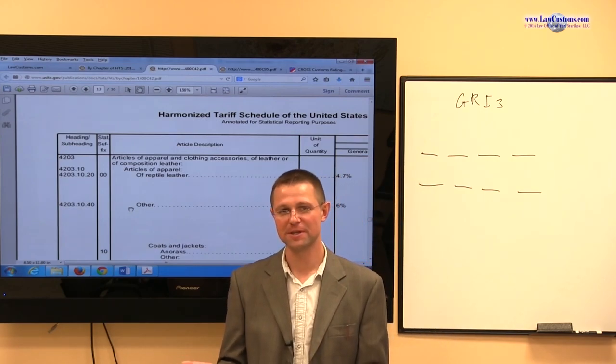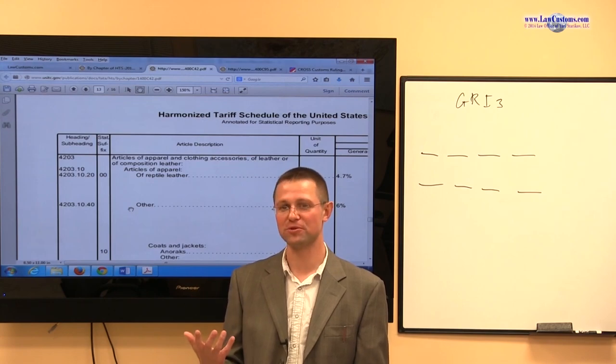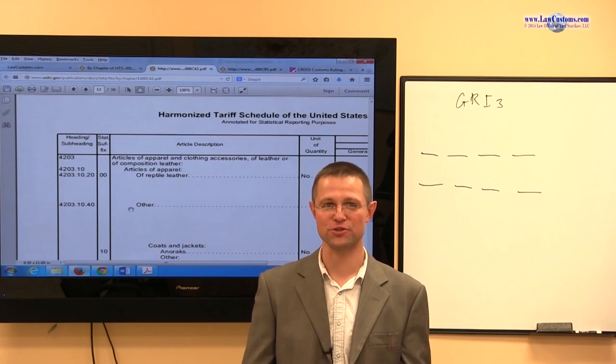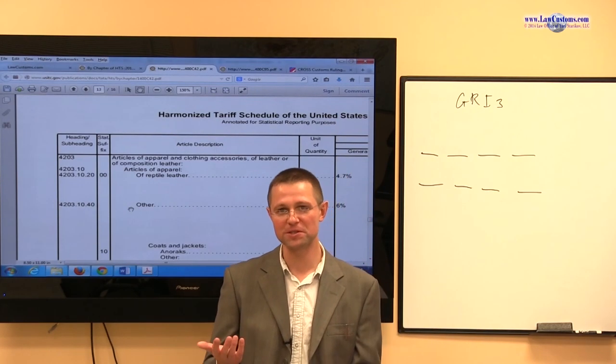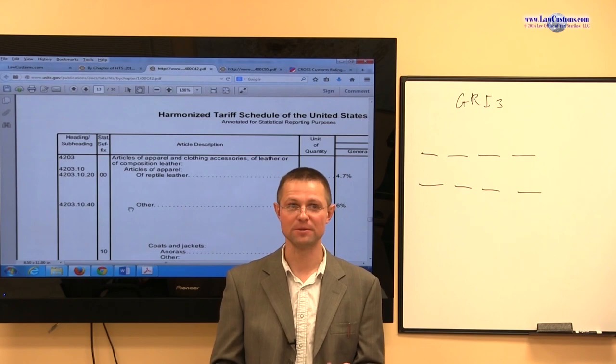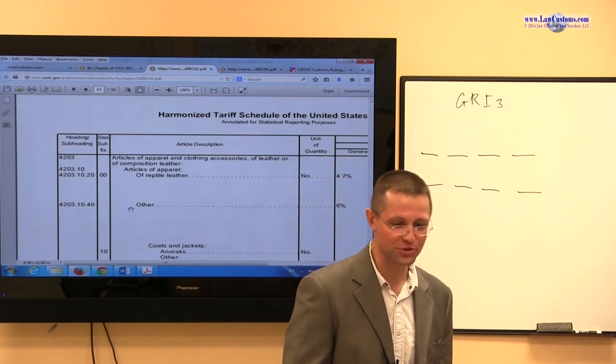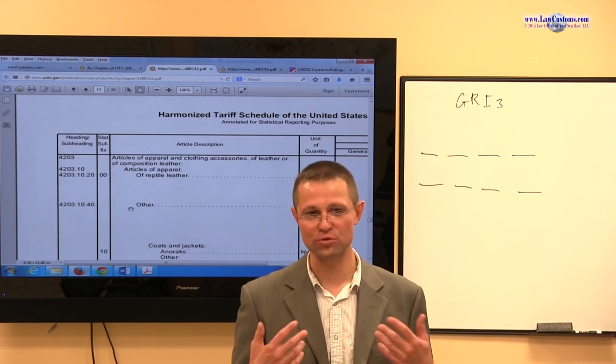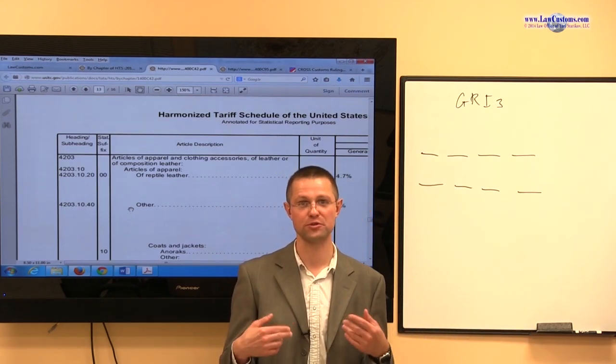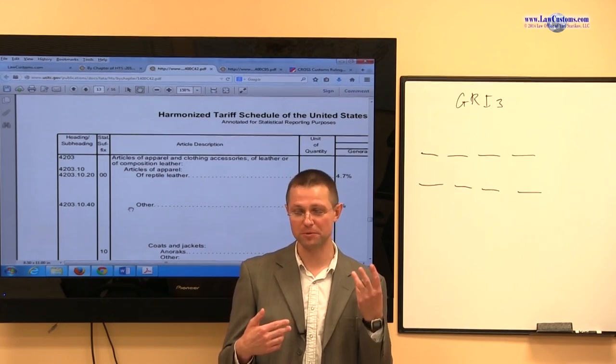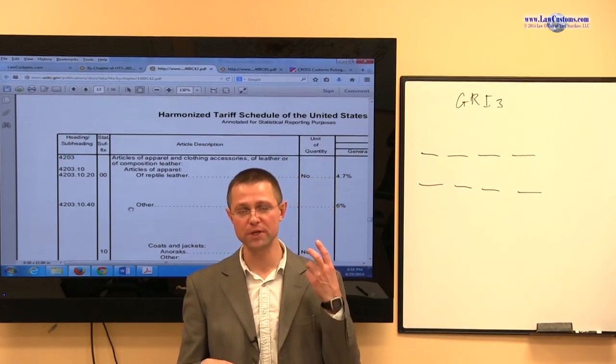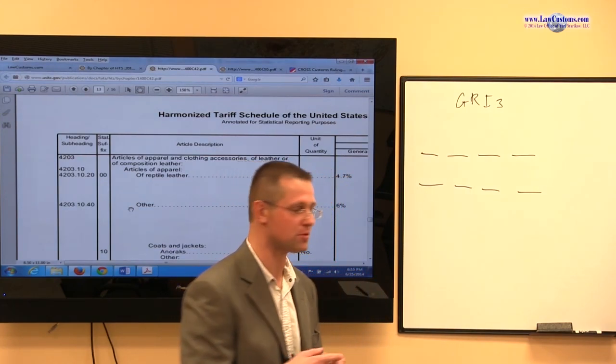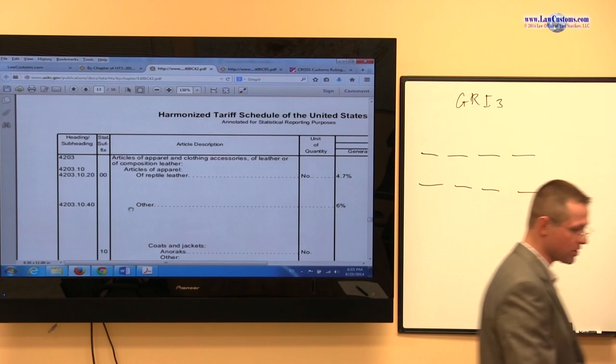95.06 is use provision, exercise equipment, irrespective of what it is. So you have this tension. Is it possible that this is GRI3? Well, to answer this question definitively, you really have to exhaust all your GRI1 possibilities - General Rule of Interpretation 1. And those possibilities include the heading notes that we looked at. Those include the section notes and the chapter notes. So let's look at the chapter notes.